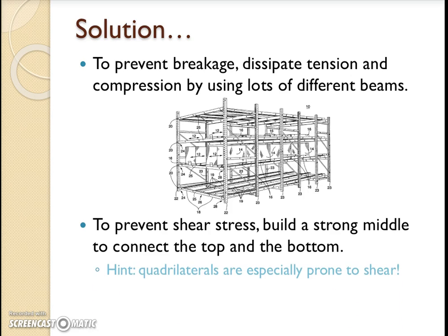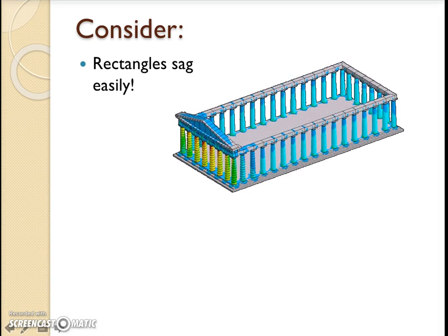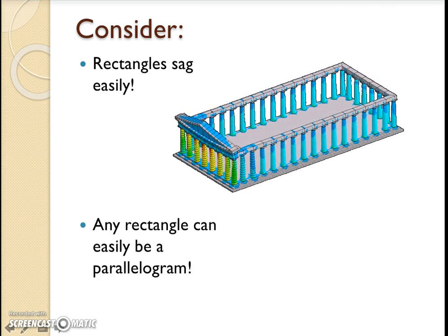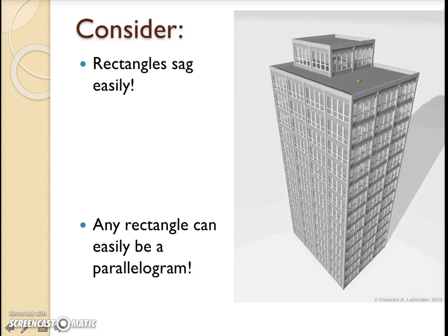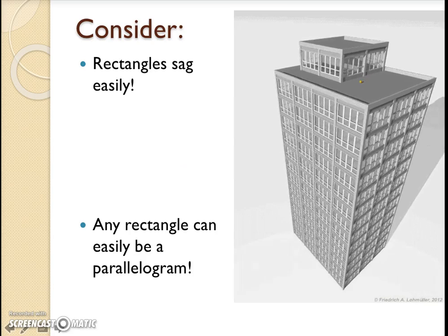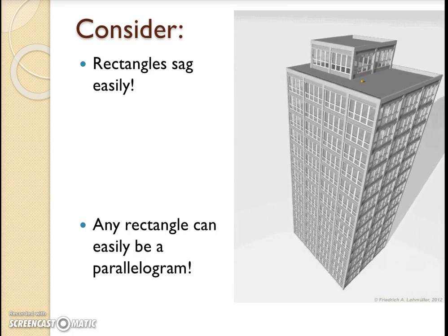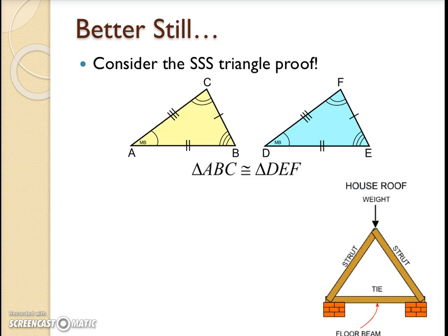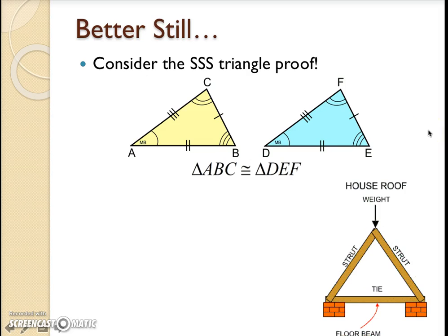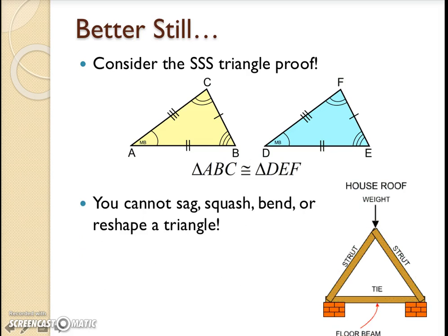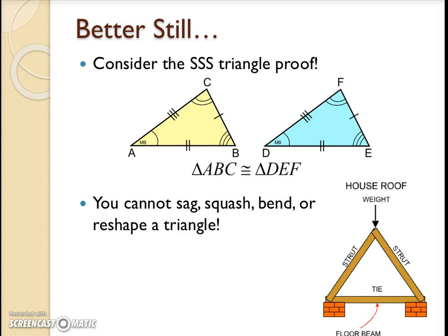How are we going to do this? First hint: quadrilaterals are especially prone to shear. Rectangles sag easily. Any rectangle can easily become a parallelogram — you can do so with the same four sides, just different angles. However, consider triangles. Remember those SSS proofs you used to do freshman year? If you know all three sides of a triangle, you know everything there is to know about that triangle. There's only one triangle you can make with those three sides — it can't be sagged or squashed or bent or reshaped in any way.